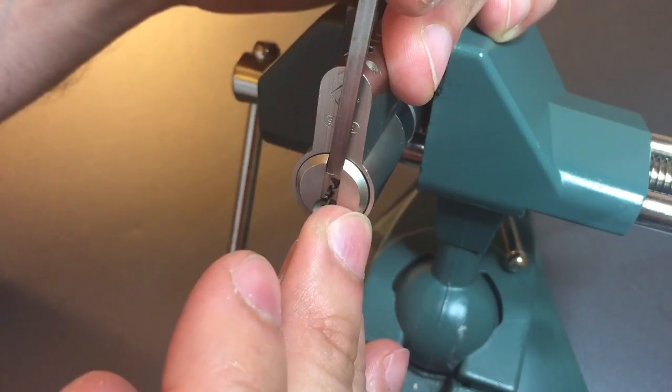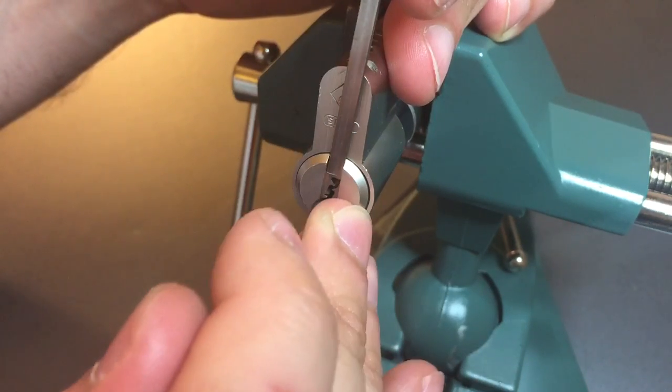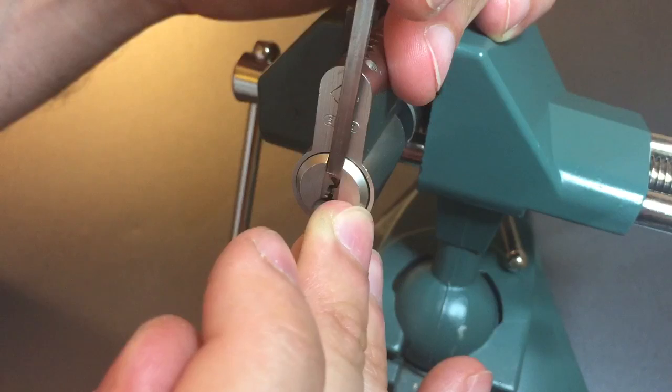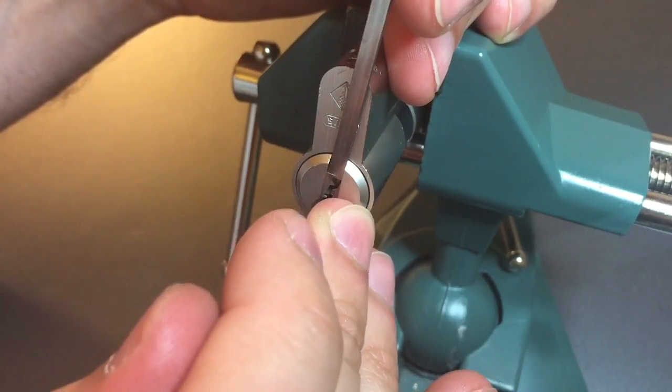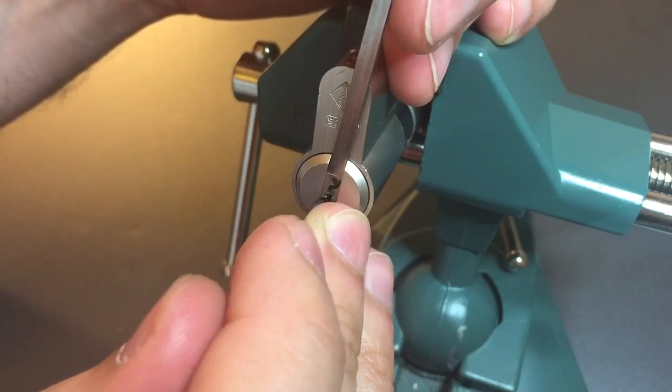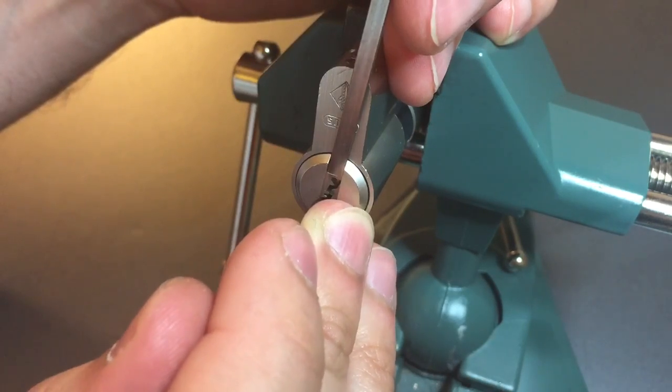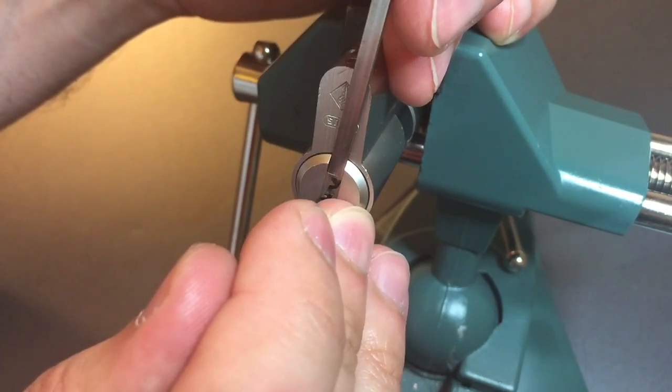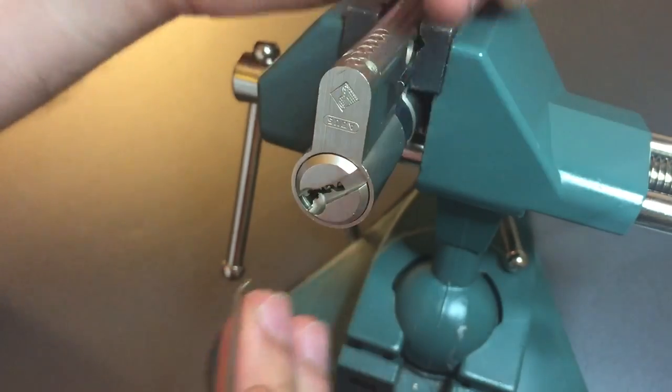One is binding. Okay, we went into a false set there. Moving on to two. Counter rotation, got him set. Nothing on three. Counter rotation on four, got him set. Moving on to five. Five, got a little click out of him. And six, opened her up.